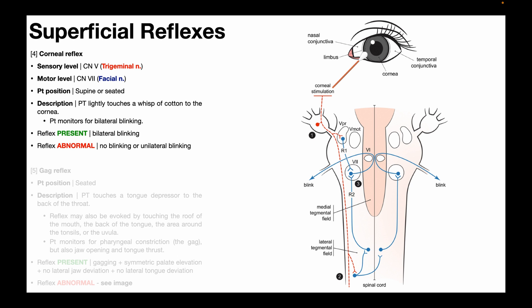In this video, we're going to continue talking about superficial reflexes by discussing the corneal reflex. The corneal reflex is different than the previous three superficial reflexes in the sense that it does not involve spinal nerve roots. Instead, it involves cranial nerves, more specifically the trigeminal nerve, cranial nerve 5, and the facial nerve, cranial nerve 7.